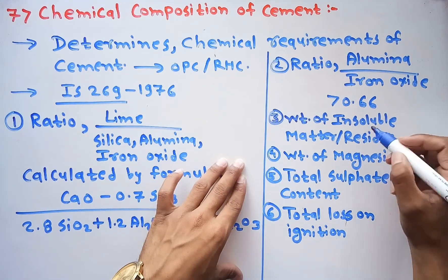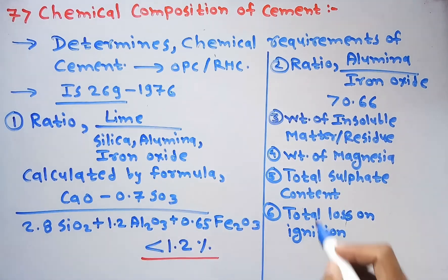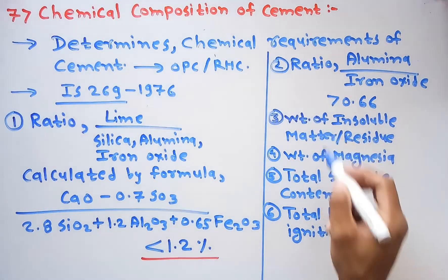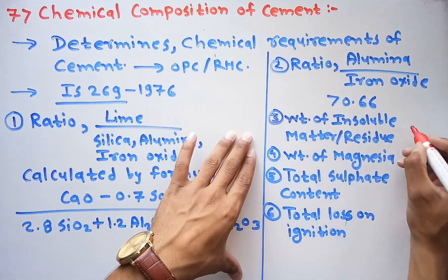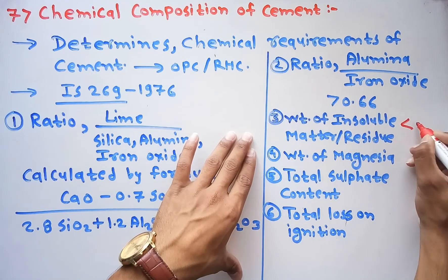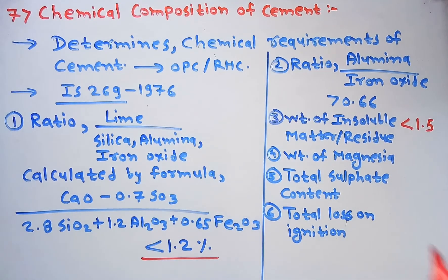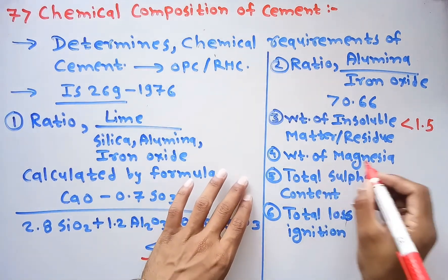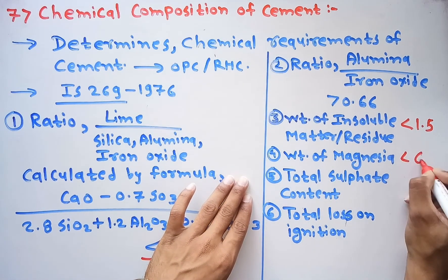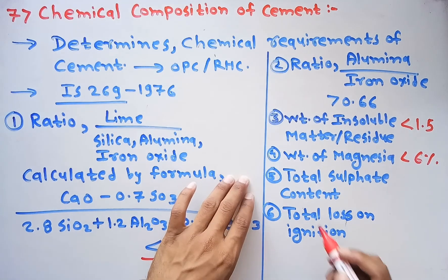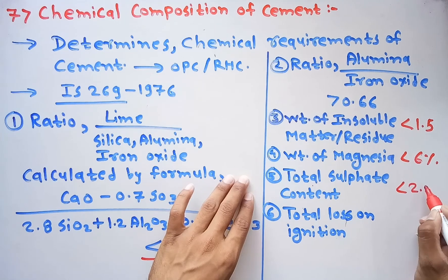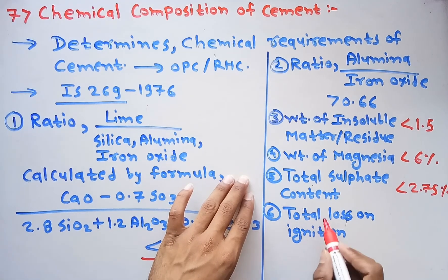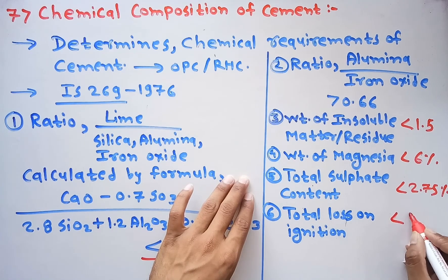Now we will see the criteria for these parameters. The weight of insoluble matter or residue should be less than 1.5%. The weight of magnesia should be less than 6%. The total sulphate content should be less than 2.75%, and the total loss on ignition should be less than 4%.